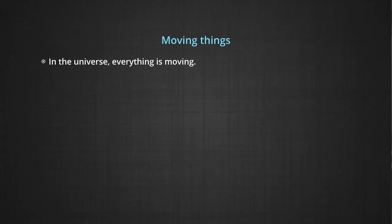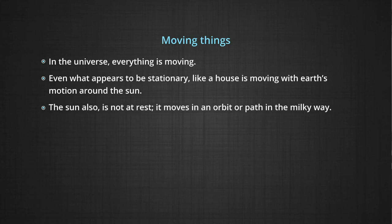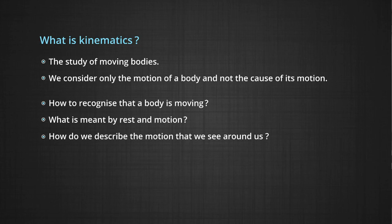This lesson is for module 1, unit 2 on rest and motion, which is kinematics. Moving things — what are the things that move around us? We have a perception of that. Lots of things move around us. Even the sun, which we think is stationary, is moving in an orbit in the Milky Way. A house that we think is stationary is moving with the earth. So everything moves. How do we recognize what is moving and what is not? Is there any method of this study? Well, this study is called kinematics, where we only look at the body and talk about how it is moving without considering what is causing its movement.